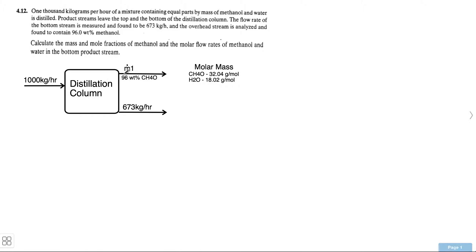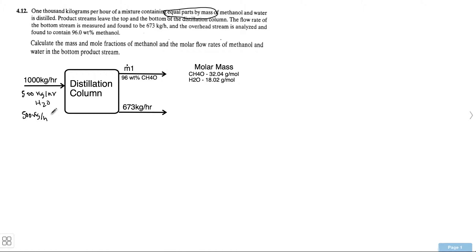The first thing I did is draw the diagram and put in all the data that I knew — what was coming in, and that the top overhead stream, which I call M1, is 96 weight percent methanol, but we don't know what M1 is as a total yet. Now, it says 1,000 kilograms per hour of a mixture containing equal parts by mass of methanol and water is distilled. This means 500 kilograms per hour is H2O and 500 kilograms per hour is methanol.